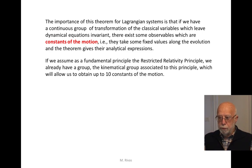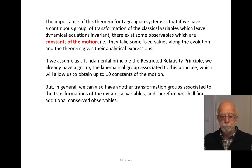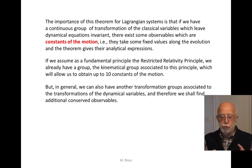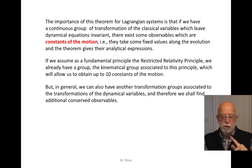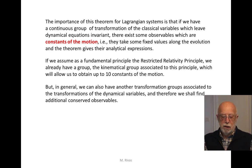Because the Poincaré group is a 10-parameter group, we can construct up to 10 constants of the motion. In general, there can be some more groups or mathematical transformations among the kinematical variables. For instance, the association to a co-moving frame — we have an arbitrariness in that selection, and therefore there will be an additional rotation group of symmetries.